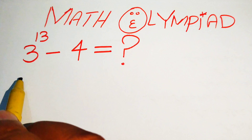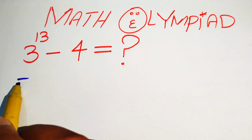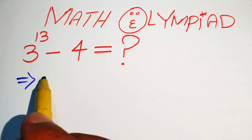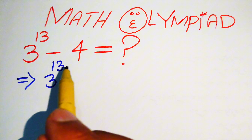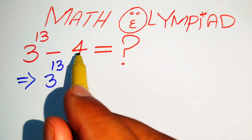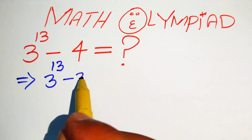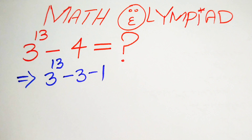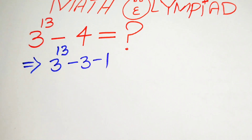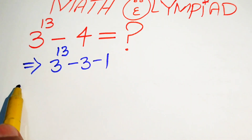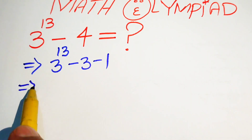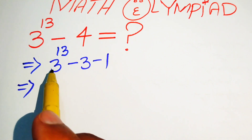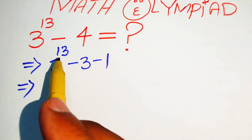The very first step is to rewrite this expression as 3 to the power of 13, and we break the minus 4 and write it as minus 3 minus 1, because we know that minus 3 minus 1 equals minus 4.